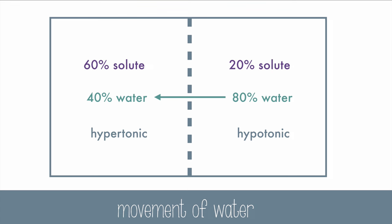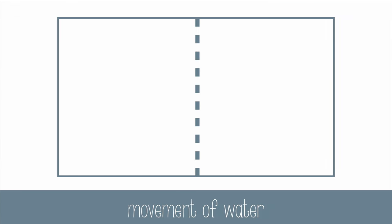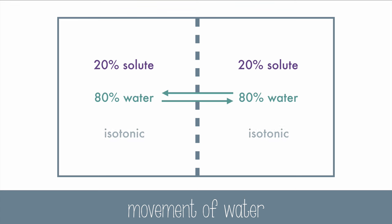Let's do one more. Now we have 20% solute and 20% solute. Find out how much water there is by subtracting from 100, so we get 80 and 80 on both sides. It's equal. But just because it's equal doesn't mean there's no movement of water. In this case, water actually moves back and forth in equal amounts, keeping both sides isotonic.